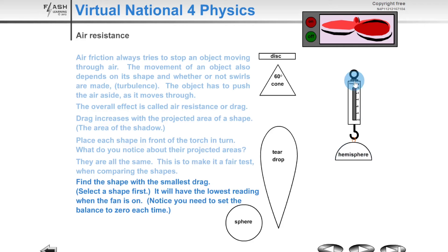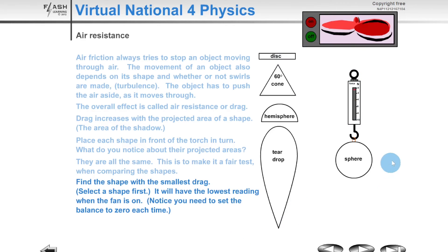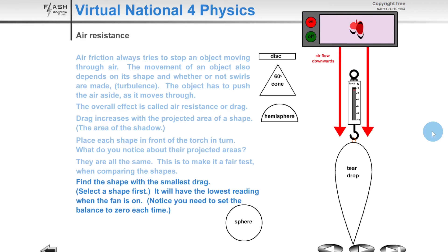Now we can try the hemisphere, and again zero the balance, and turn on the fan. This time we're getting about 4 Newtons. Let's try the sphere this time, and zero the balance, and turn on the fan. This time we're getting just under 2 Newtons. And lastly let's try the teardrop. Turning on the fan here you can see we've got just under 1 Newton.